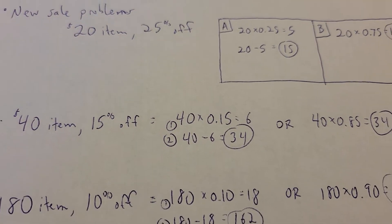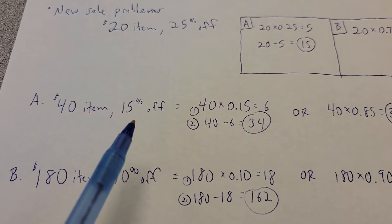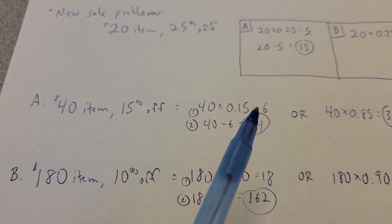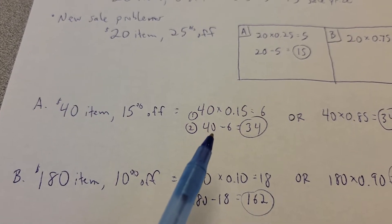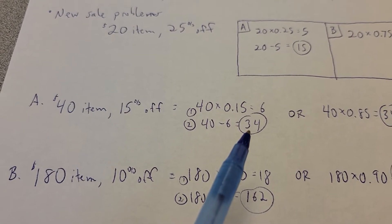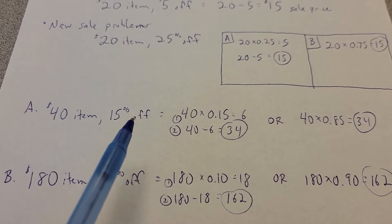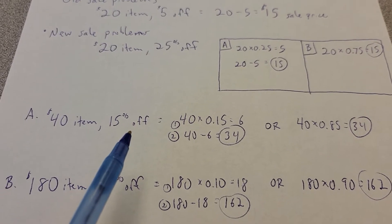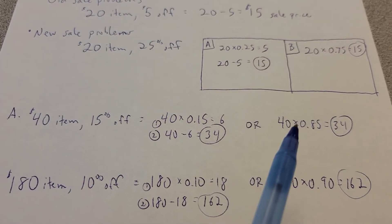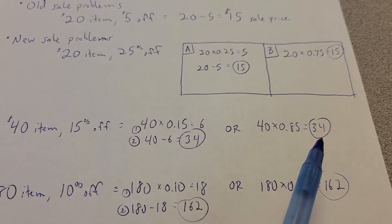Let's look at some more examples of these. If you have a $40 item, 15% off. You can take 40 times 0.15, and you're going to save $6. 40 minus 6 means you pay $34. Or if you know 15% is off, 100 minus 15 means 85% is still left that you've got to pay. So take 40 times 0.85, and you get $34 there.